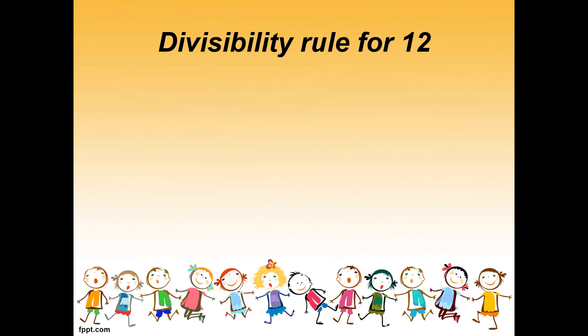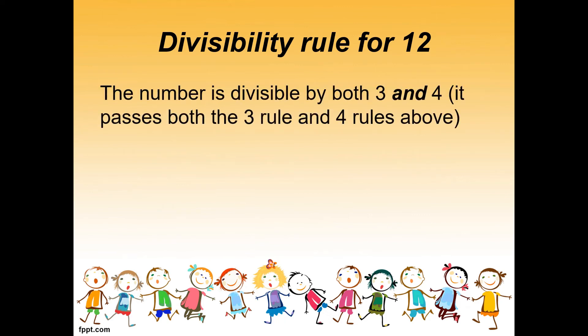Divisibility rule for 12: the number must be divisible by both 3 and 4. We know that 3 times 4 equals 12, so it must pass both rules. The rule for 3 is: if the sum of the digits is divisible by 3. The rule for 4 is: if the last two digits are divisible by 4.